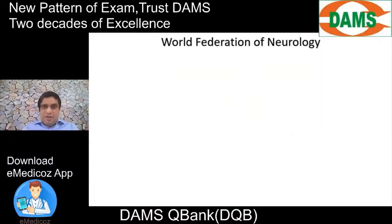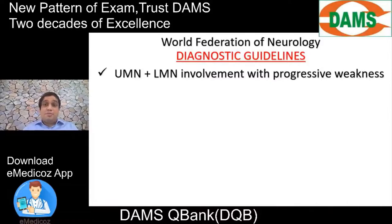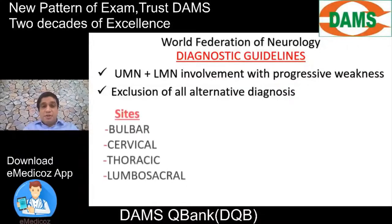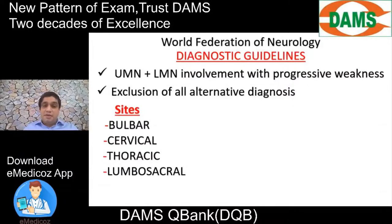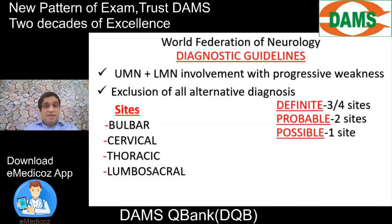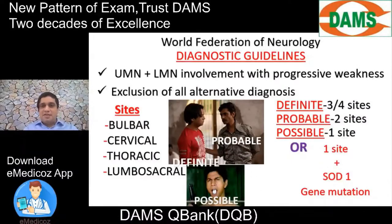The World Federation of Neurology diagnostic guidelines for ALS require UMN and LMN involvement with progressive weakness, and exclusion of all alternative diagnoses. The sites involved in ALS can be bulbar, cervical, thoracic, or lumbosacral — four possible sites. If three or more sites are involved, it is definite ALS. If two sites are involved, it is probable ALS. If just one site is involved, it is possible ALS. If only one site is involved but there is an SOD1 gene mutation, it can still be classified as definite ALS.